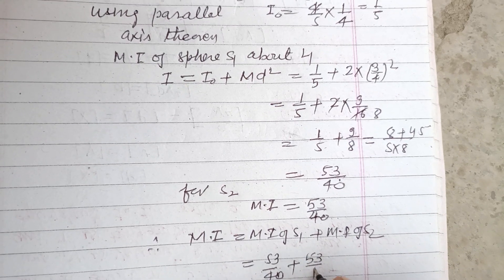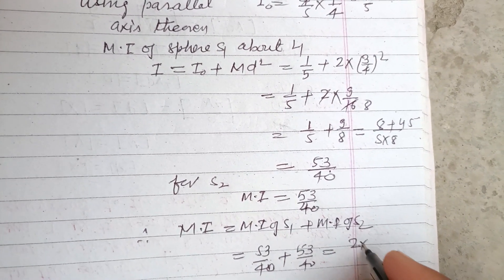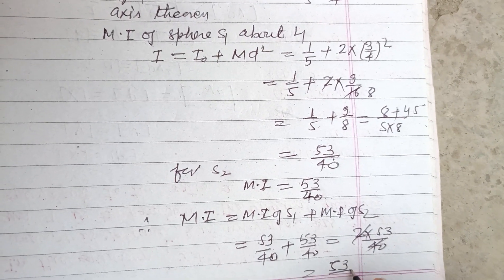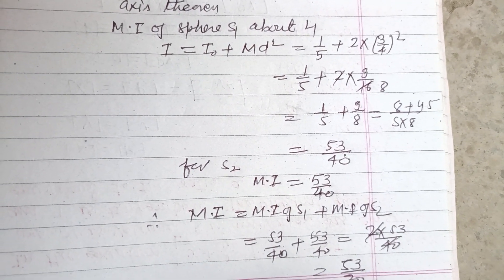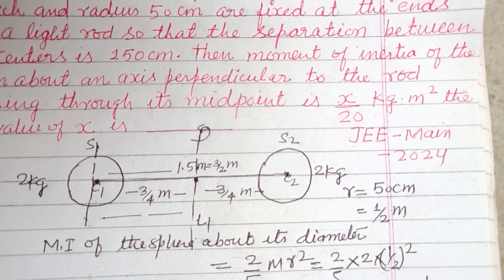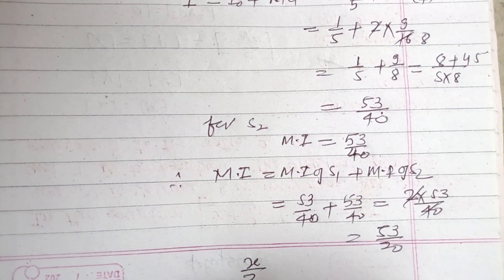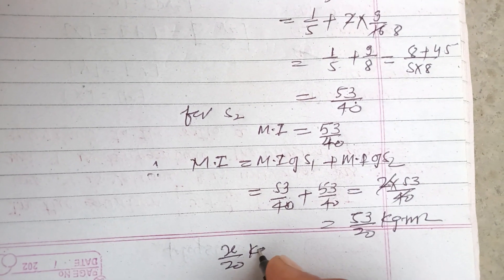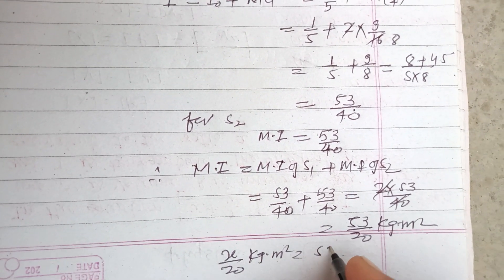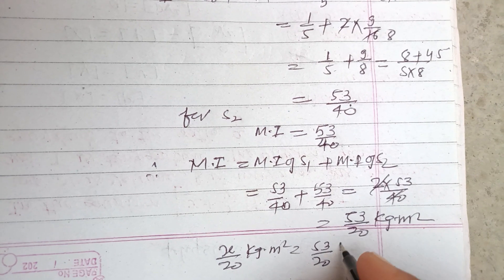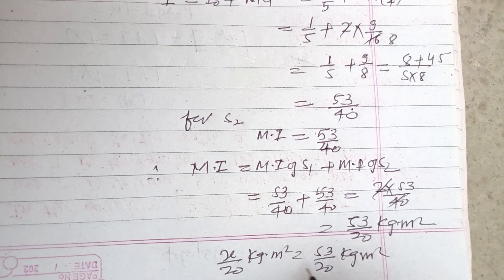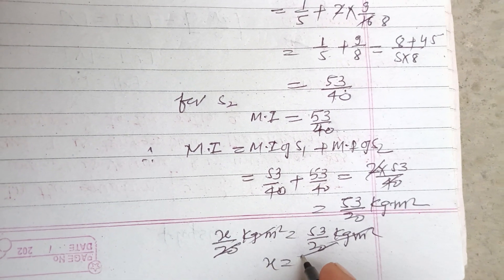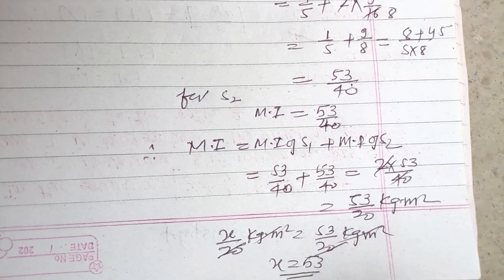So this is 53/40 + 53/40, so 2 × 53/40 = 106/20 = 53/20. Now comparing with the given x/20 kg⋅m²: x/20 kg⋅m² equals 53/20 kg⋅m², so 20's cancel, kilogram meter squared cancel, x equals 53.